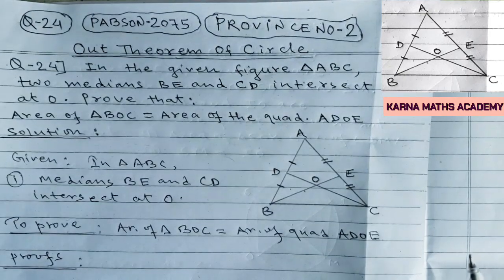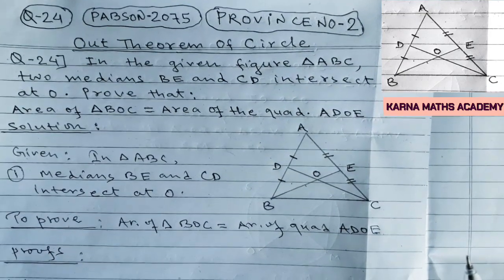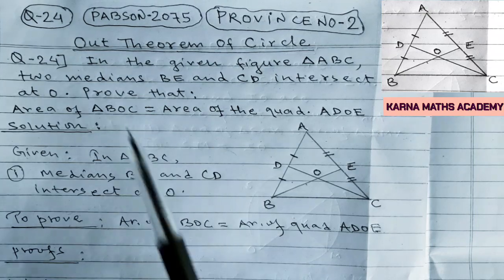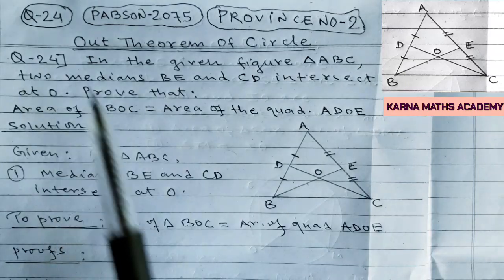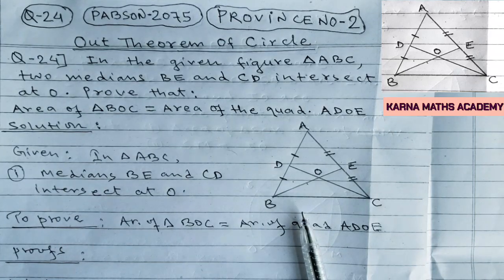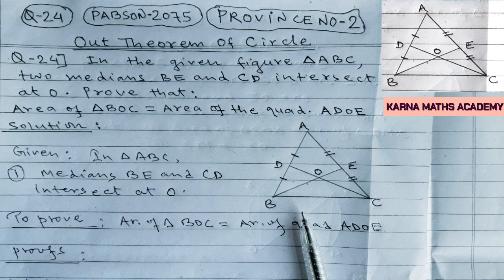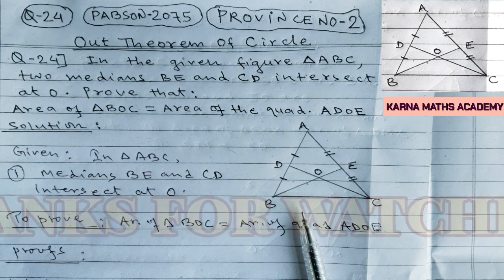I hope you have understood the solution of question number 24 which is asked in Pabson 2075, province number 2. Thank you for watching this video. If you have not subscribed to our YouTube channel Corner Mass Academy, please subscribe and press the notification bell icon so you can get notified when a new video is uploaded. We'll meet again in the next video with new content — till then, bye, have a nice day!